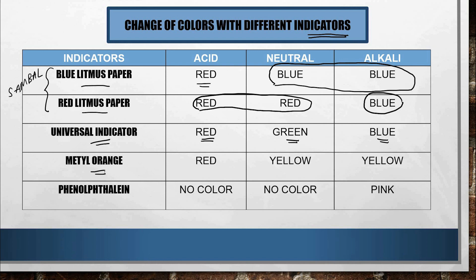Methyl orange is red in acid and yellow for neutral and alkali. We don't commonly use methyl orange in the laboratory because it is difficult to distinguish between neutral and alkaline. Phenolphthalein shows no color for acid and neutral, but displays a pink color in alkaline conditions, proving the solution is alkaline.